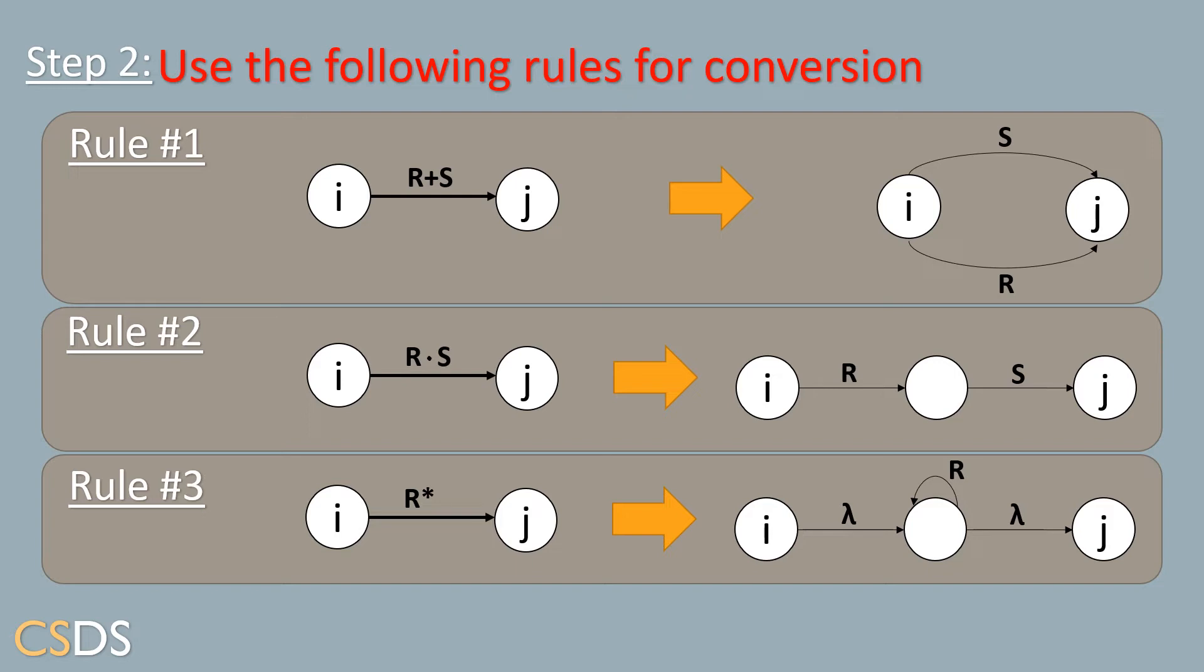Rule number two refers to R followed by S transition, and that we will convert to two separate transitions divided by a new state.